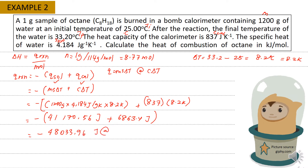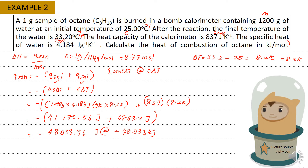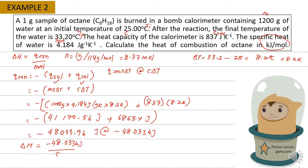Converting Q-reaction to kilojoules gives negative 48.034 kilojoules. Then delta H equals Q-reaction divided by number of moles: negative 48.034 kilojoules divided by 8.77 times 10⁻³ mole, giving delta H equals negative 5480 kilojoules per mole.